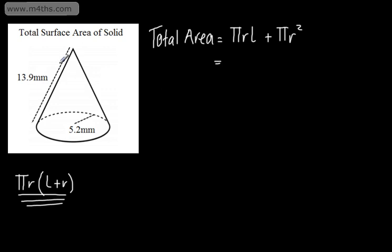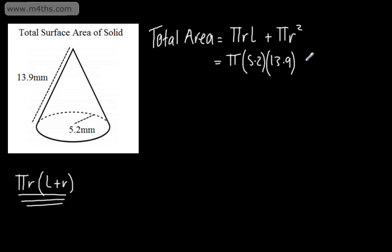Let's just check what we have. We've got the slant height rather than the perpendicular height, which is good, and we've got a base radius. So we'll have pi multiplied by the base radius of 5.2 multiplied by the slant height of 13.9, plus pi multiplied by the radius squared, which is going to give us 5.2 squared.